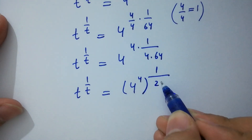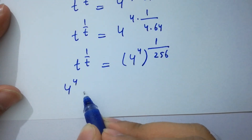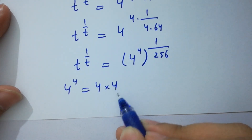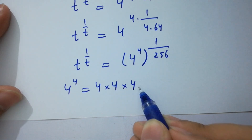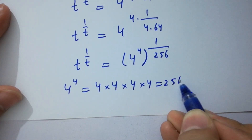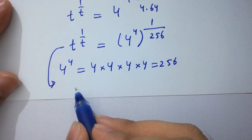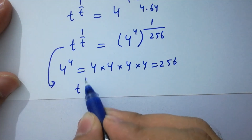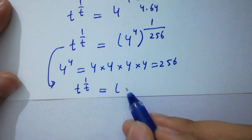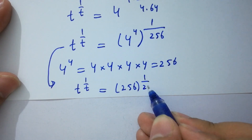Now 4 to the power 4 equals 4 times 4 equals 16, times 4 equals 64, times 4 equals 256. So we have t to the power 1 over t equals 4 to the power 4, which is 256, to the whole power 1 over 256. That is, t to the power 1 over t equals 256 to the power 1 over 256.